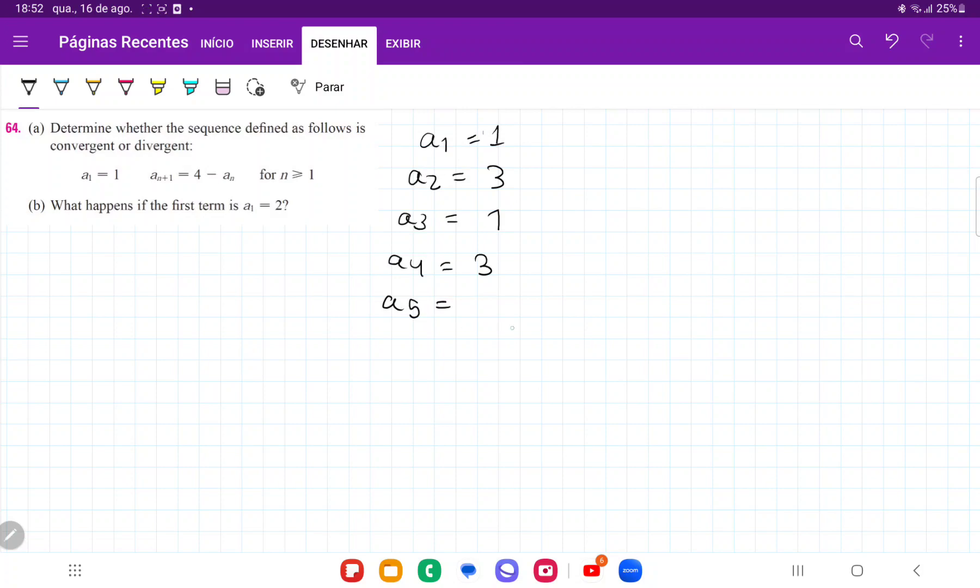a5 is going to be 4 minus the previous, so 4 minus 3 equals 1. a6 equals 4 minus the previous, so 3, and so on and so forth.